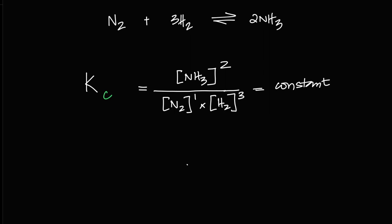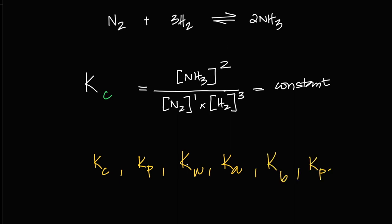In AS level you'll have Kc and also Kp — that's in terms of pressure of gases. Then in A2 you'll encounter Kw (water equilibrium), Ka (weak acids like ethanoic acid), Kb (weak bases like ammonia), Kpc (partition coefficient), and Ksp (when salts dissolve partially in water — that's why you form precipitates in the lab). These are all equilibrium constants. There'll be many equilibriums to cover in second year.